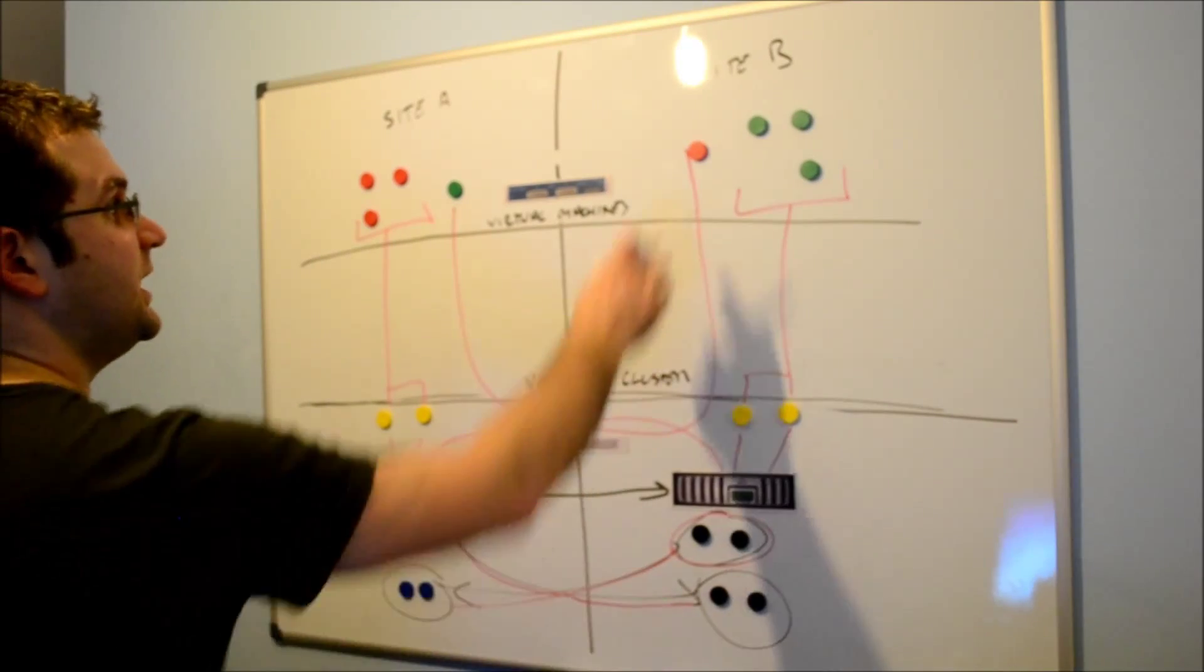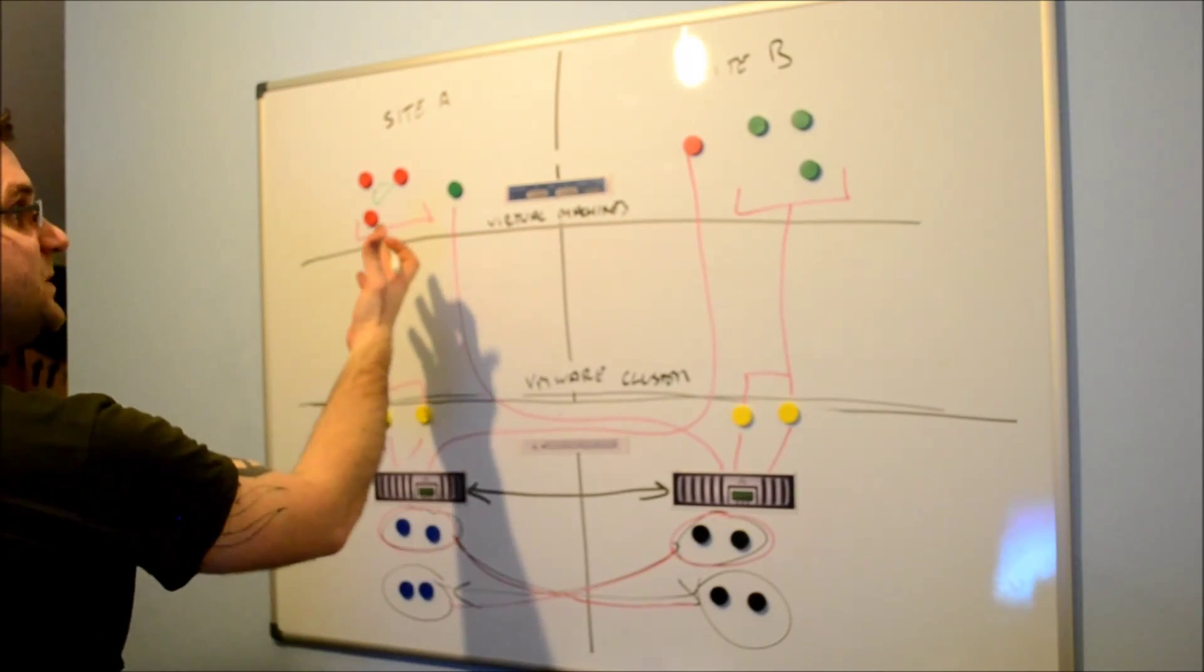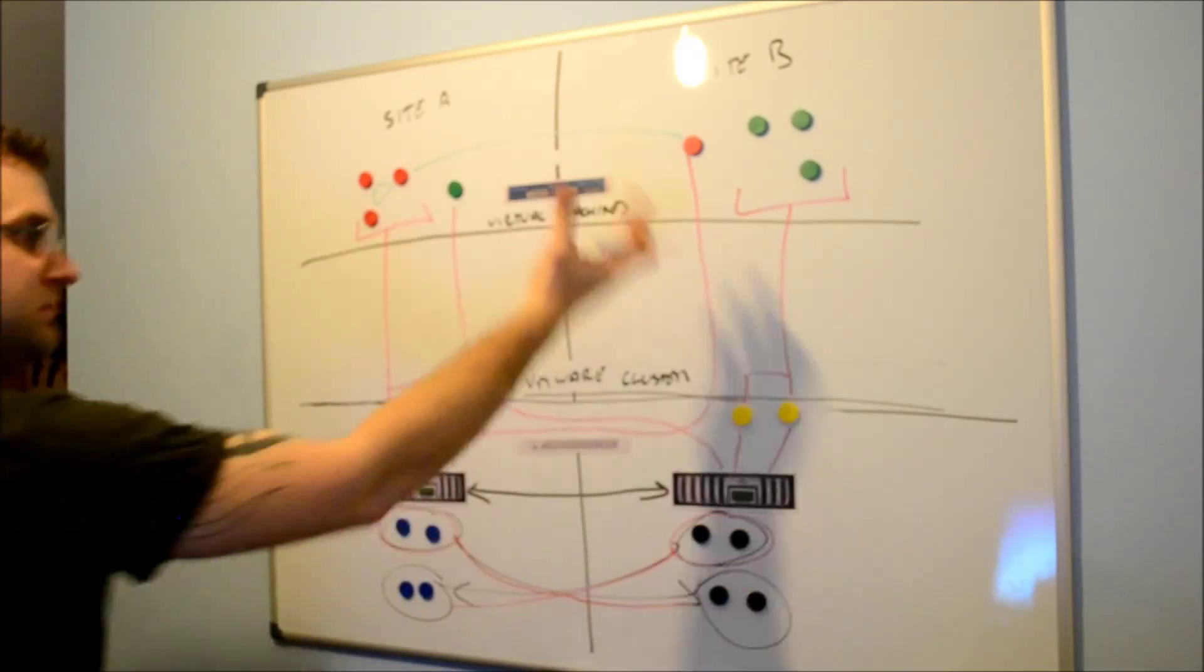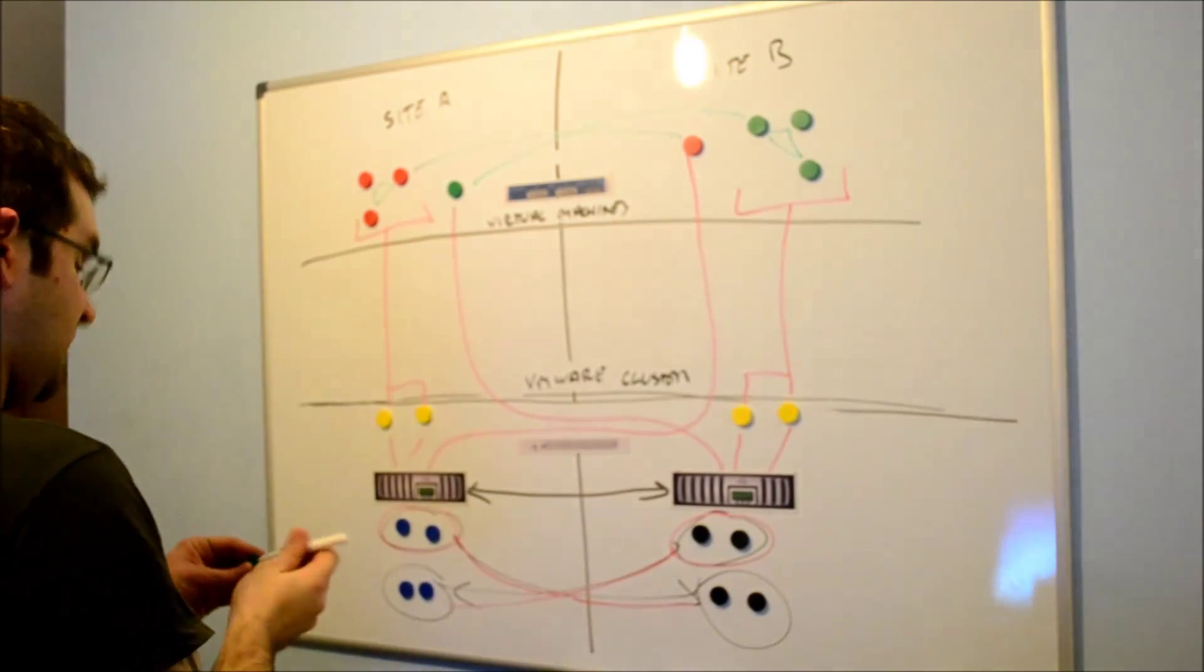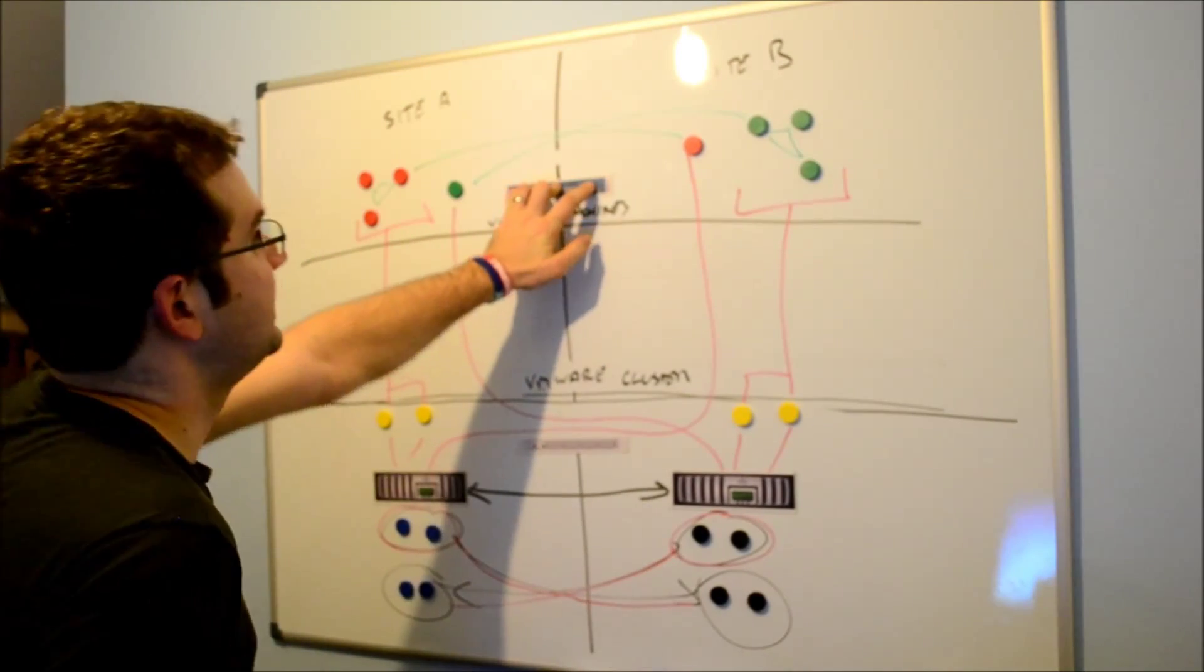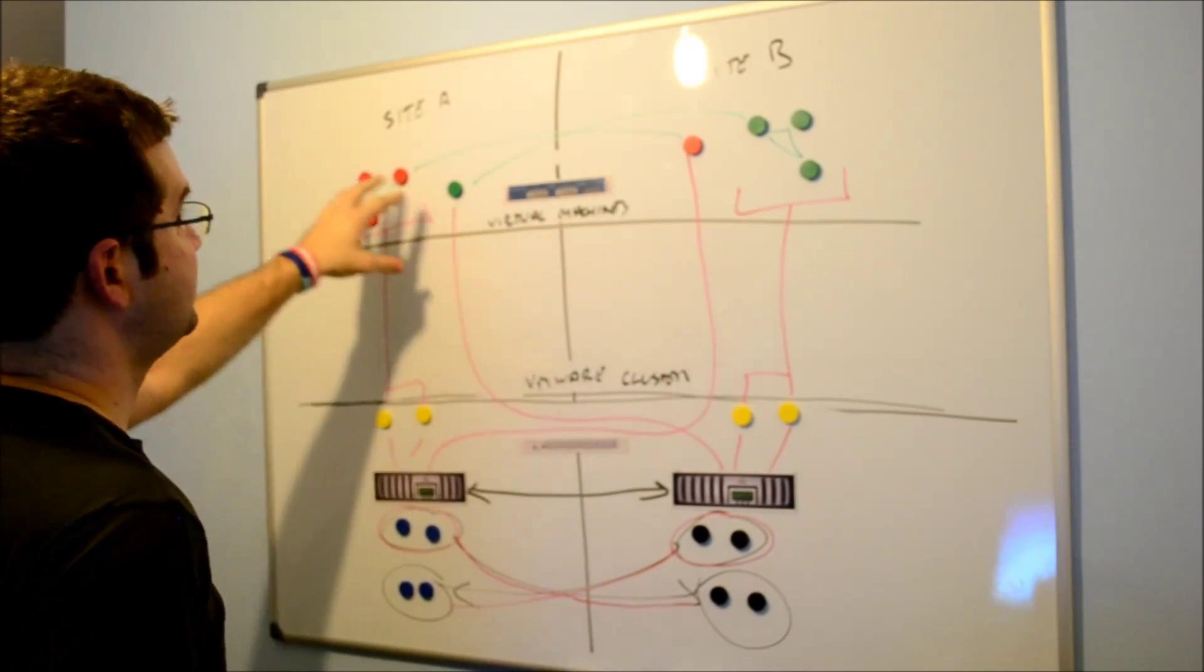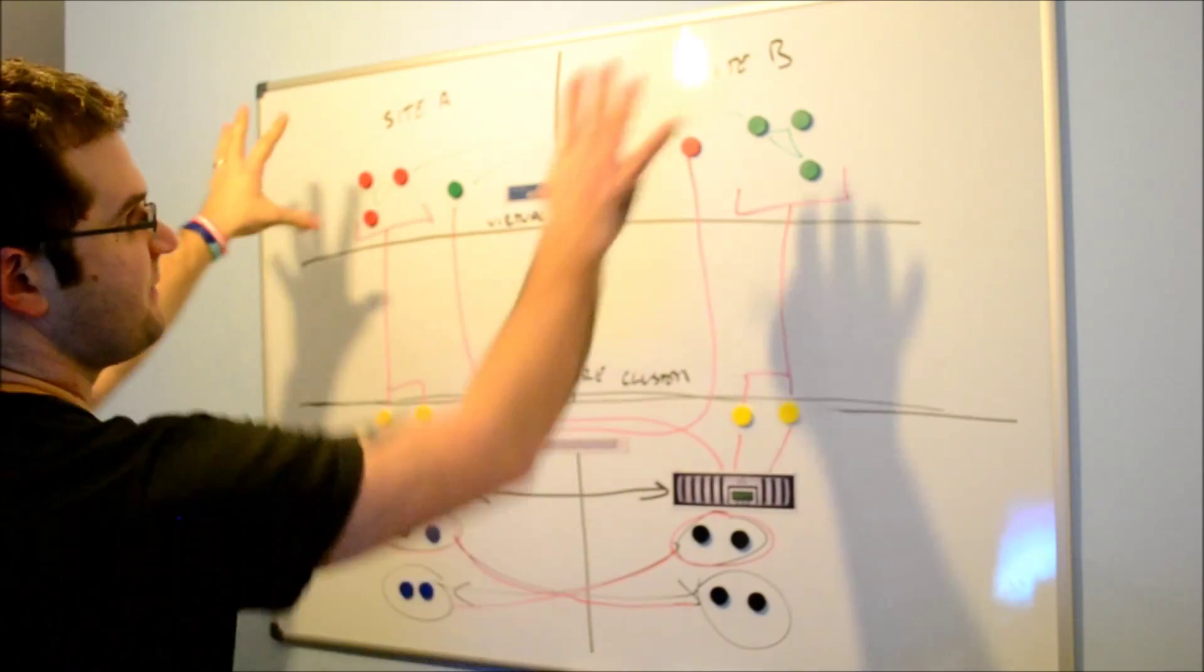In addition to that, we've got any network communication that was previously local between a local site, is now traversing the extended network, which is going to increase the latency. Now, because this is a stretch layer 2 VLAN, there's no geographic locations assigned to IP addresses, so they don't know that these are now in a geographically different site.